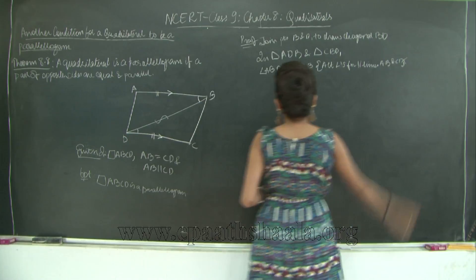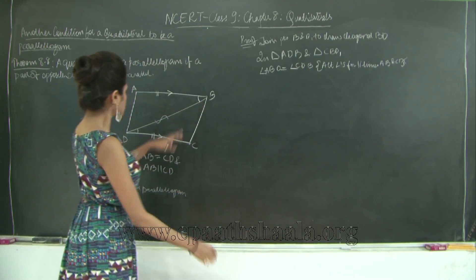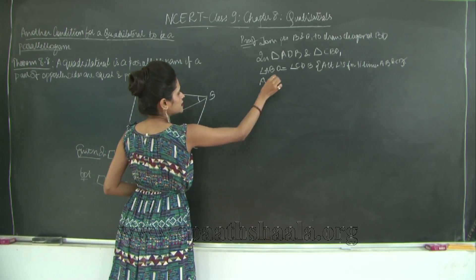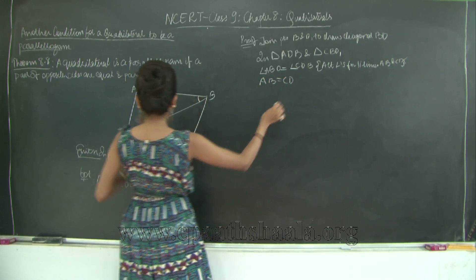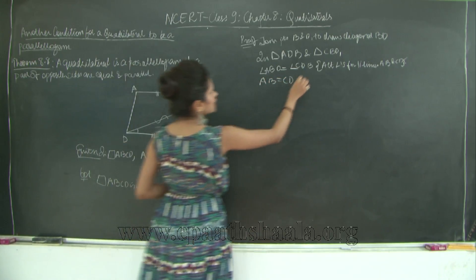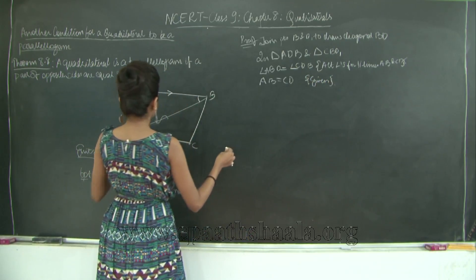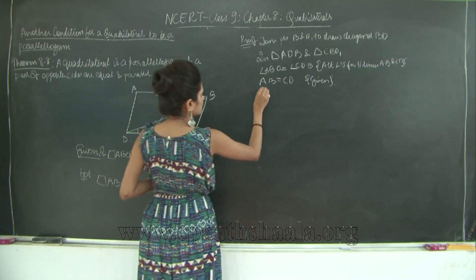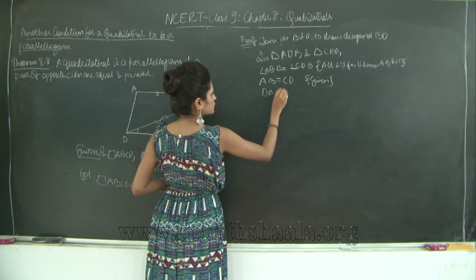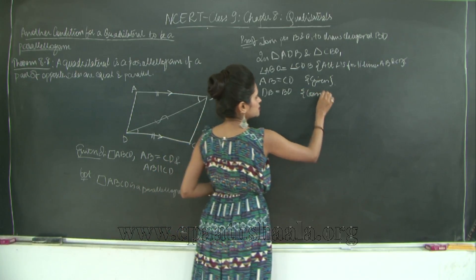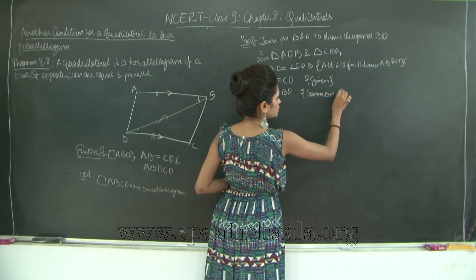Also, AB is equal to CD, this is given, and DB is equal to BD. They are the common side for both the triangles.